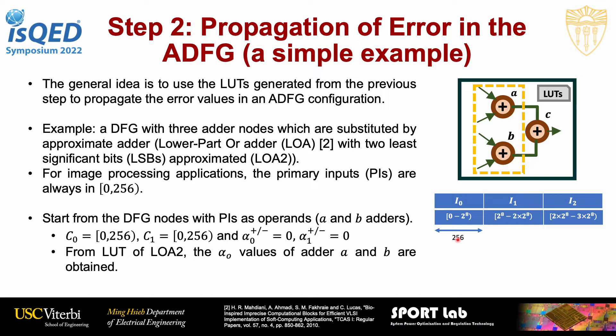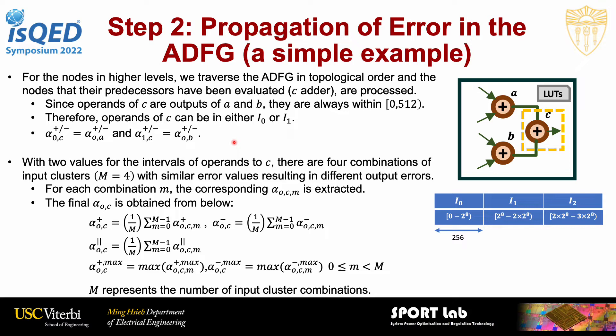In this example, we start from the DFG nodes which have primary inputs as their operands — in this case, adder A and adder B. For these adders, we know the interval of the operands: they are always within 0 and 256, so they are always in interval number 0. Also, primary inputs carry no error, so the error for the operands is 0 for adder A and adder B. This means that with the lookup table of LOA2 given, we can extract the alpha O values of adder A and adder B. Next, we traverse the ADFG in topological order and process the nodes where the predecessor nodes have been evaluated — in this case, adder C.